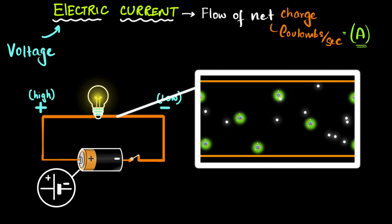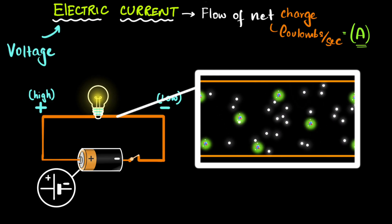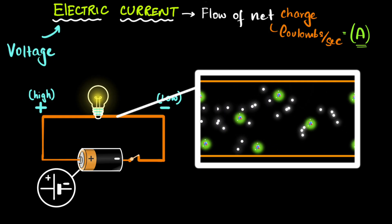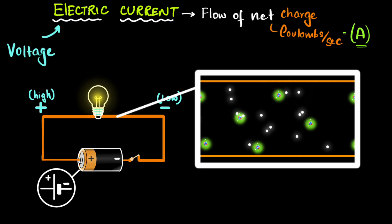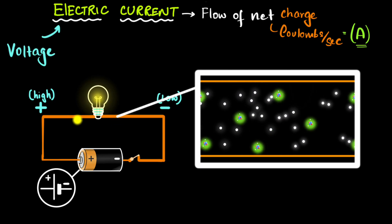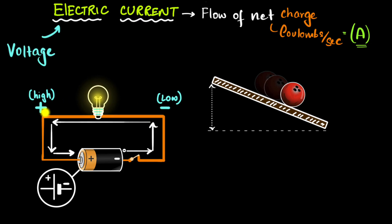A better way to think about it is that the battery produces an electric field inside the wire, and it's that electric field that pushes the electrons, making them drift. But why do the electrons drift toward the positive terminal? Electrons are attracted by the positive terminal and repelled by the negative terminal, so they move from lower potential toward higher potential — like going uphill. This was a point of confusion for a long time, so let's address it.